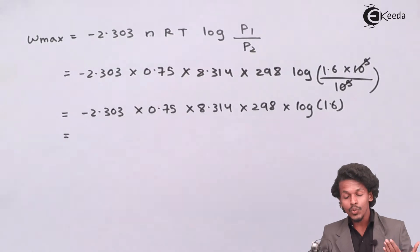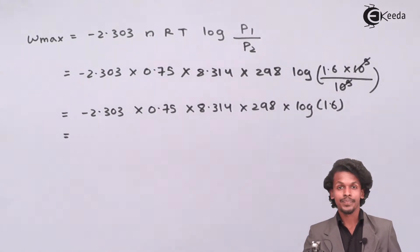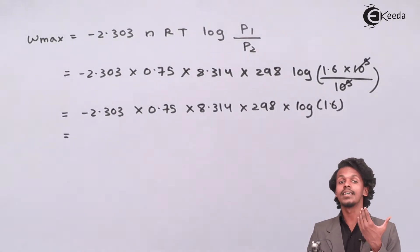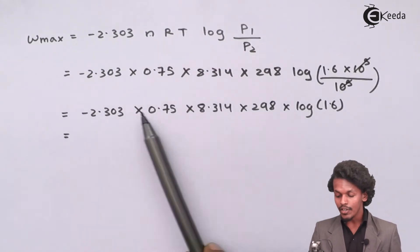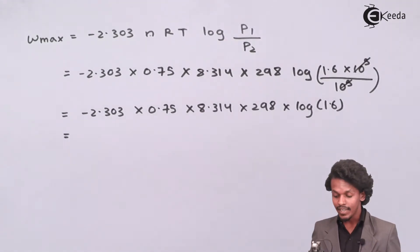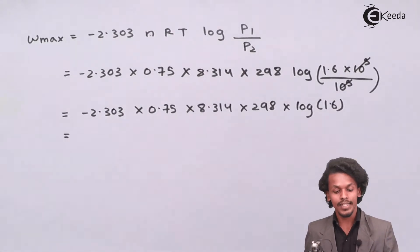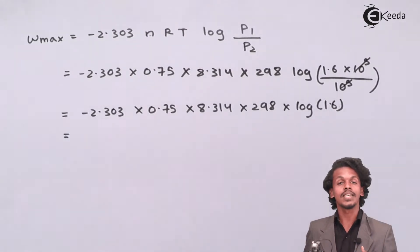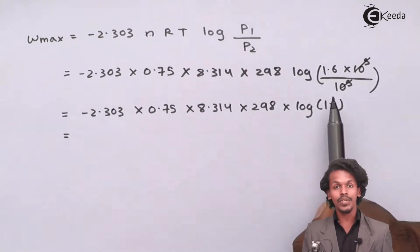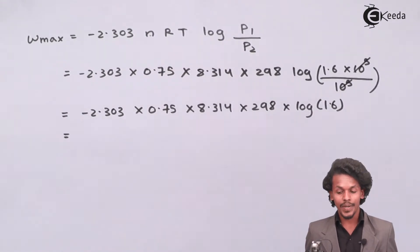Whenever a log term is included in such a numerical, you must first calculate the log of that particular value before applying log-antilog to the whole expression. So first we calculate log(1.6), which is found to be 0.20.